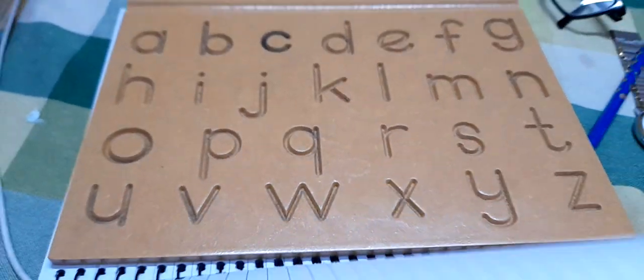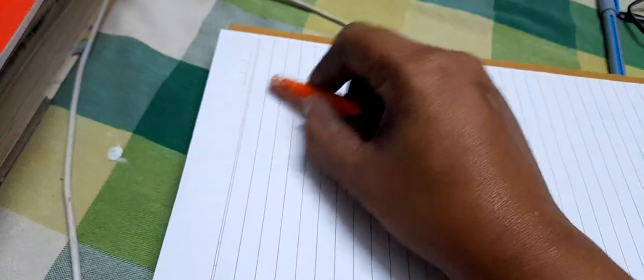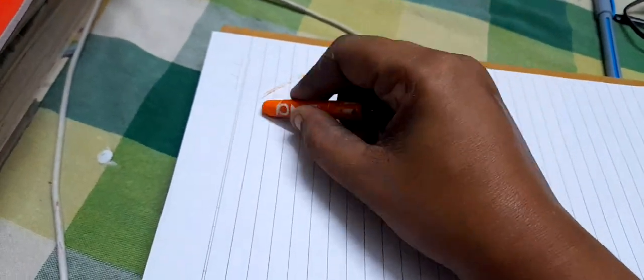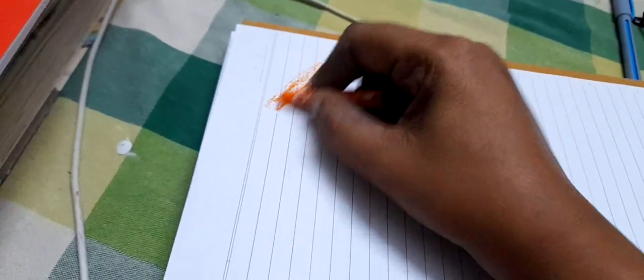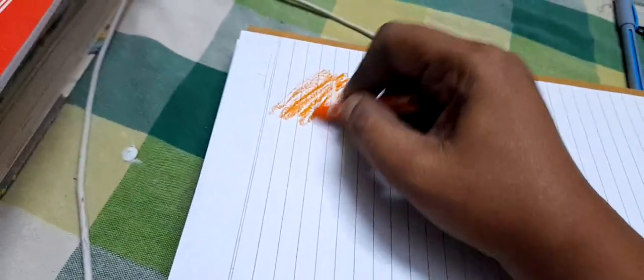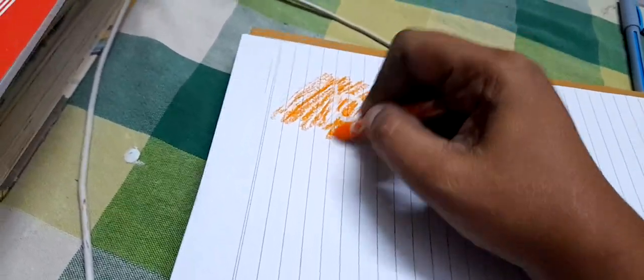When we give something to tiny tots, what do they do? First we give crayons. Pencils and pens feel dangerous for kids as they put them in their mouth, so avoid those. When they're given crayons, just ask them to scribble and they'll find out some shapes.